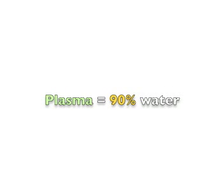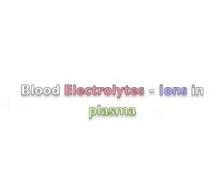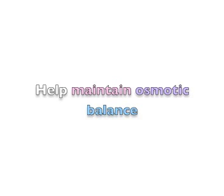Plasma is about 90% water. Electrolytes are examples of ions dissolved in plasma. They help to maintain osmotic balance as well as buffer the blood at a pH of 7.4.